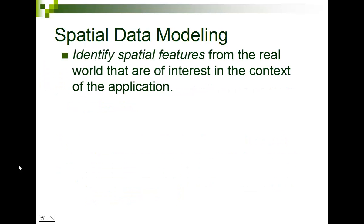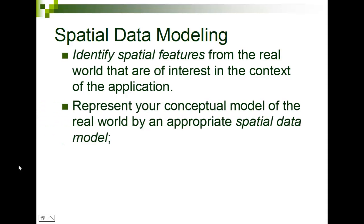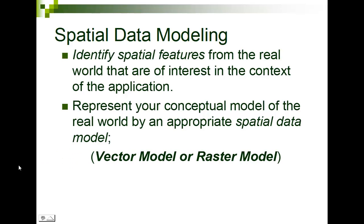When we talk about a spatial data model, we need to identify the spatial features from the real world that are of interest — whether it's a river, a county, a census tract, a patient, or someone who died of cancer. We've got to figure out what we want to model or map, and then represent them using the appropriate data model. We have a vector model and a raster model — two very disparate approaches.